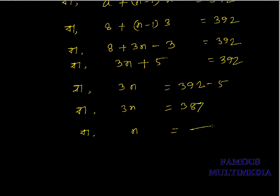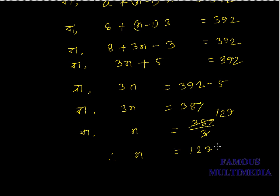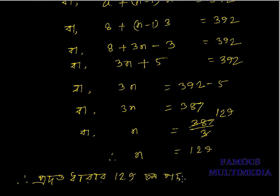3n equal 387, divided by 3. You can see that the value of n is 129, and we can confirm that the value gives 392.